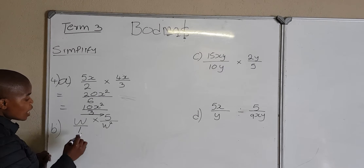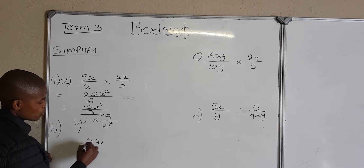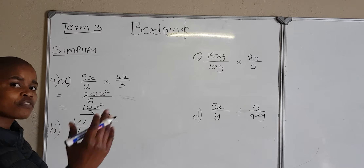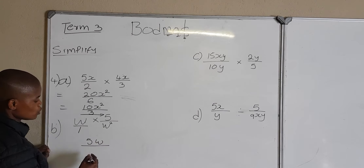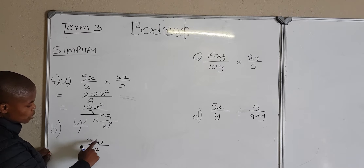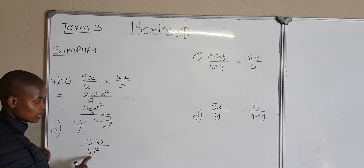So now we are going numerator by numerator: w times 5 is going to be 5w. Do not be confused — the order of writing algebraic expressions starts with a number and then a variable. So even if it's w times 5, write 5w. 1 multiplied by w squared is going to be w squared. So now we have 5w over w squared.